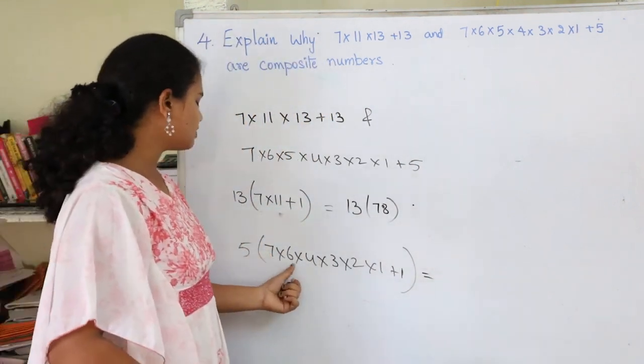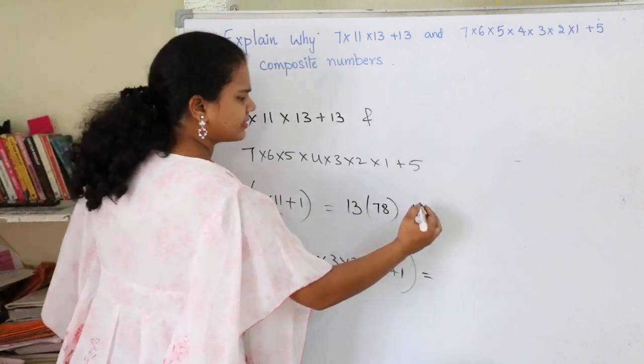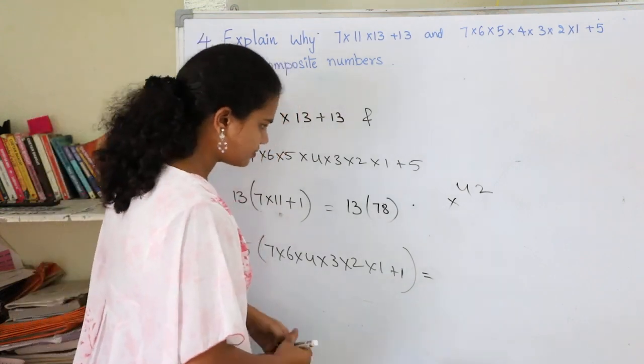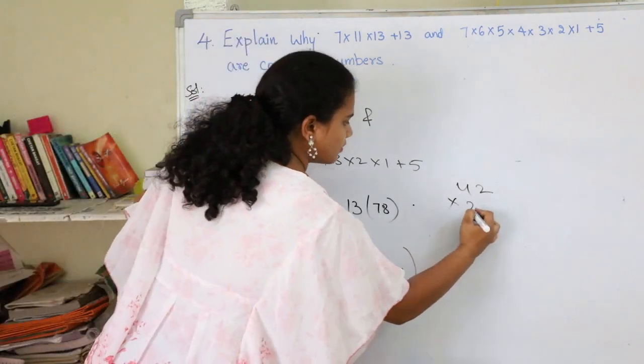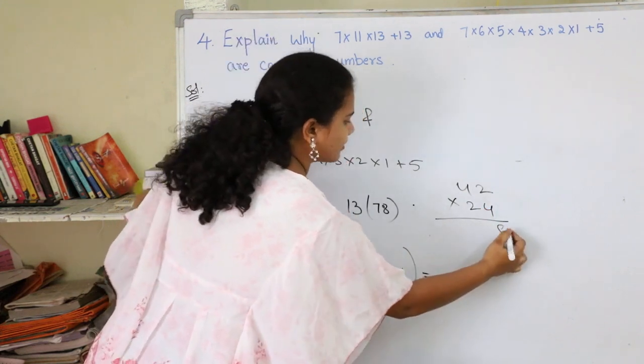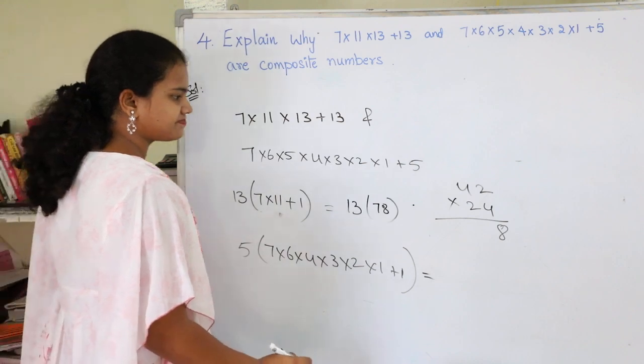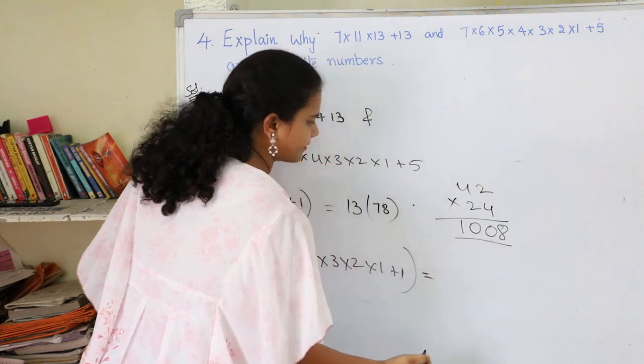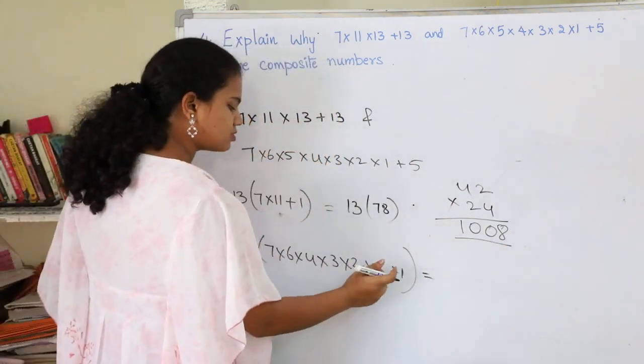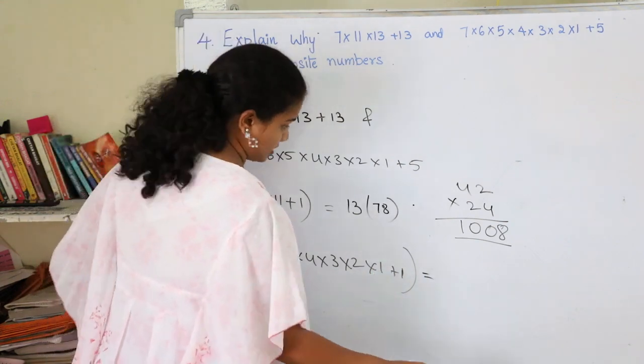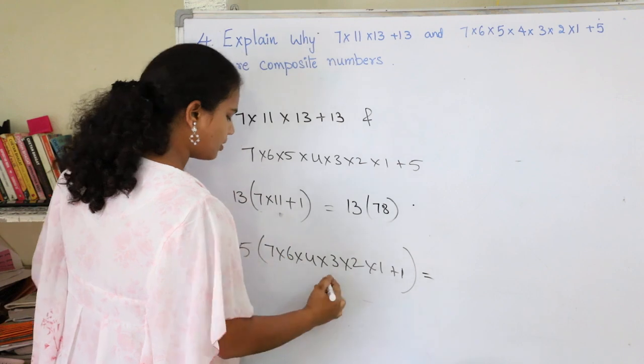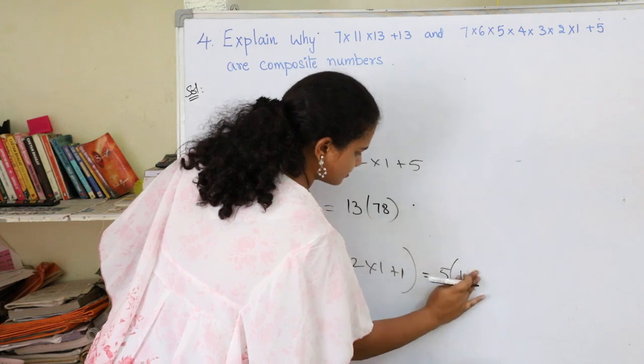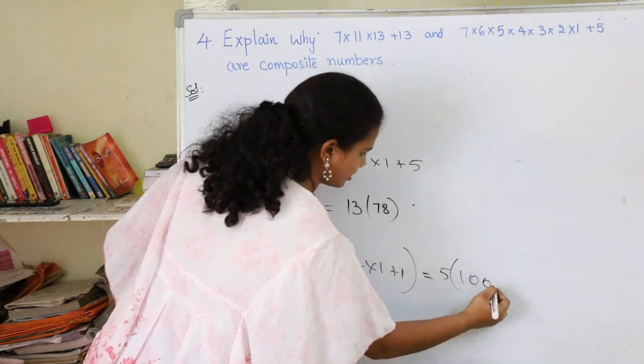For the second bracket, let's calculate: 7 × 6 equals 42, then 4 × 3 equals 12, so 42 × 24. Computing this: 42 × 24 equals 1008. Adding 1 gives 1009. So we have 5 × 1009.